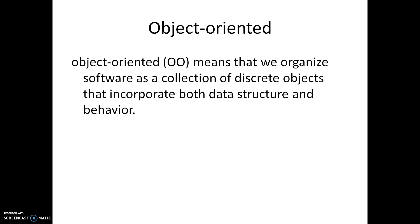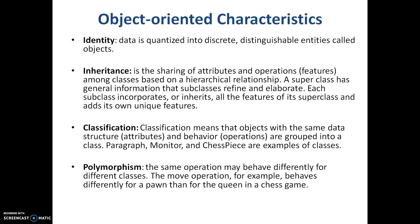What is object-oriented? We now understand what an object and a class are. Object-oriented means that we organize software as a collection of discrete objects that incorporate both data structure and behavior. So everything we are modeling is in terms of objects, referring to the data structure and behavior in terms of their attributes and operations.